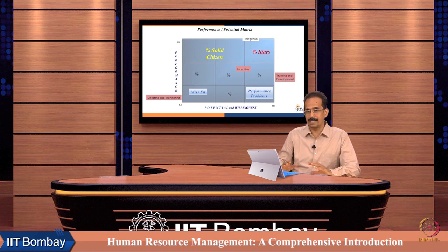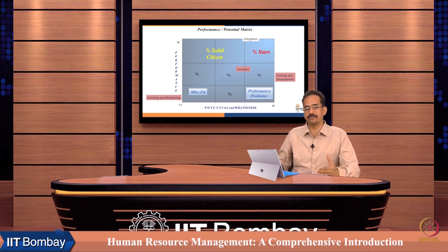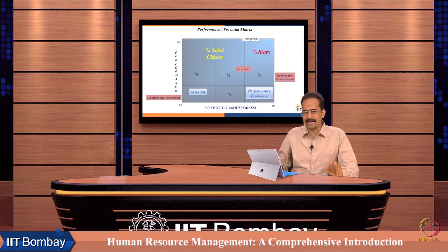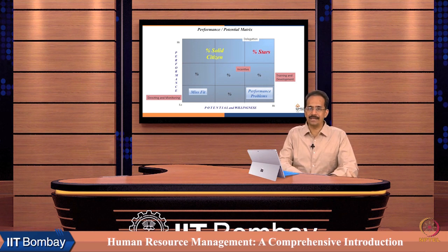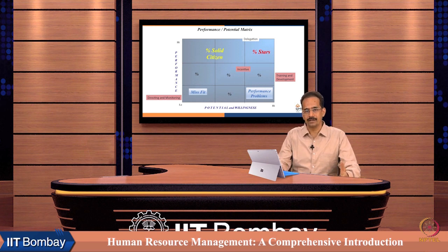Training and development do not work and are not very useful for all categories of employees. Training and development work best for people who are in the middle range of potential, willingness, and performance. The talent management matrix can be very helpful to track and manage different kinds of talent according to their requirements, and HR can use this talent matrix to share policies with top management.